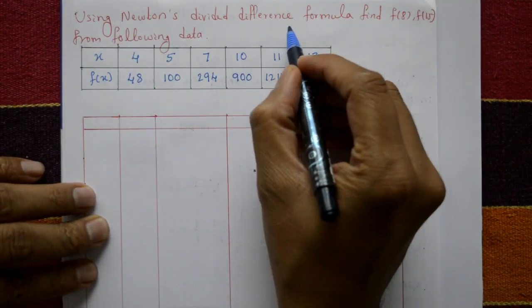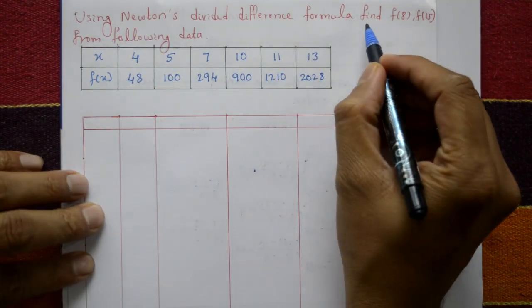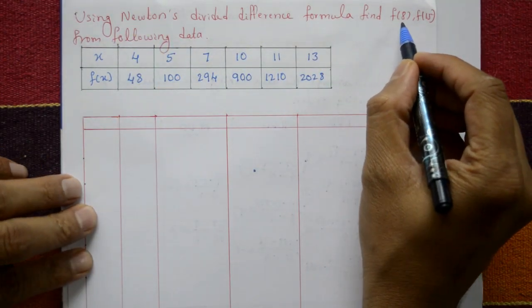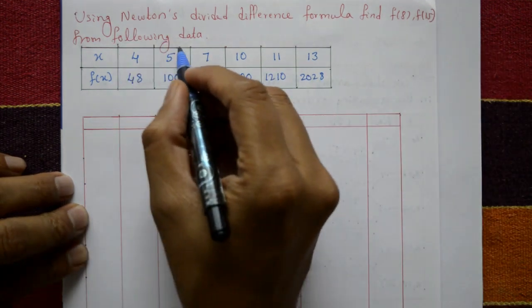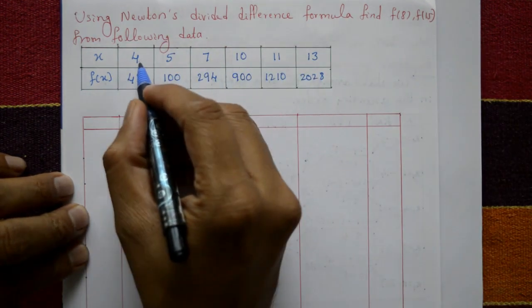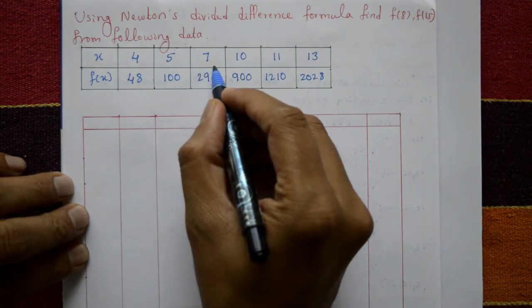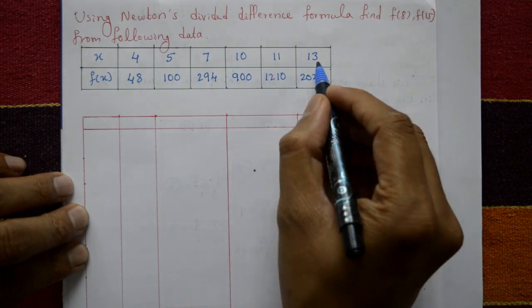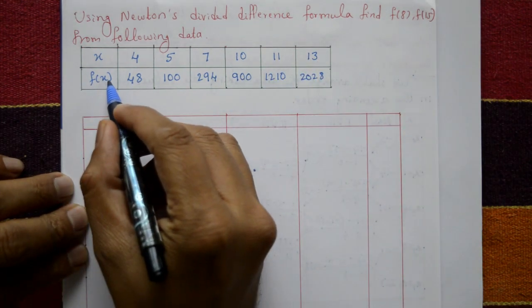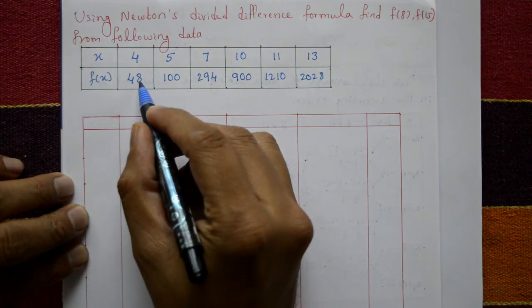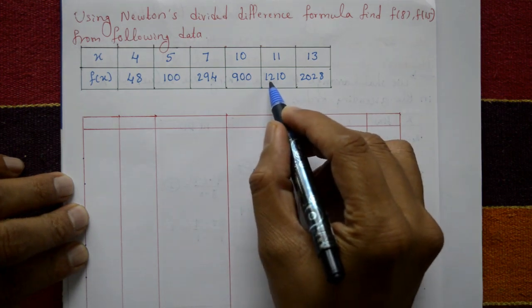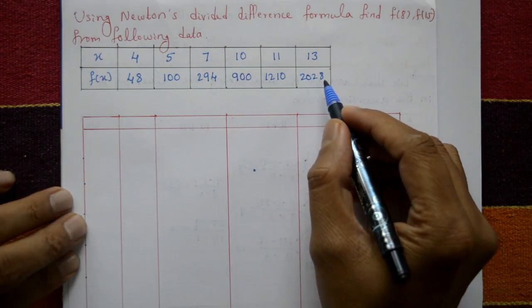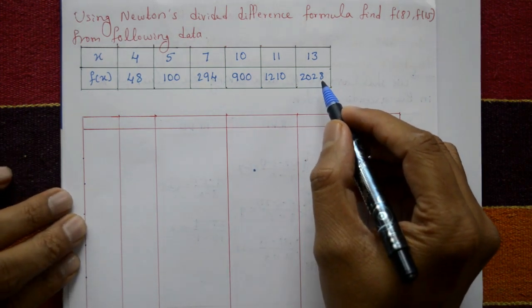Using Newton's divided difference formula, find f(8) and f(15) from the following data. The x values are 4, 5, 7, 10, 11, 13, and the f(x) values are 48, 100, 294, 900, 1210, 2028.